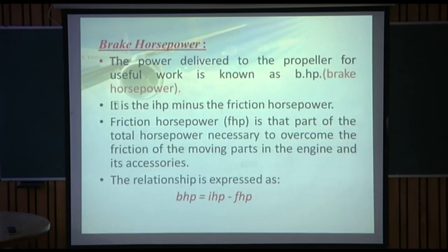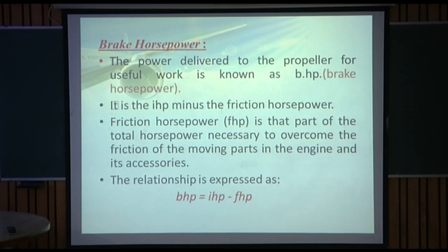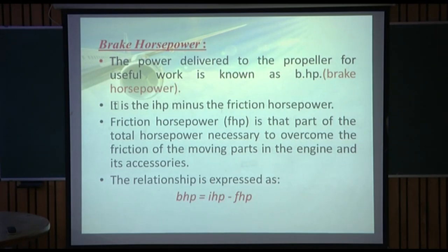Brake horsepower (BHP) is the power delivered to the propeller for useful work. It is the indicated horsepower minus the frictional horsepower. Friction horsepower is that part of the total horsepower necessary to overcome the friction of the moving parts in the engine and its accessories. The relation is: BHP = IHP − FHP.